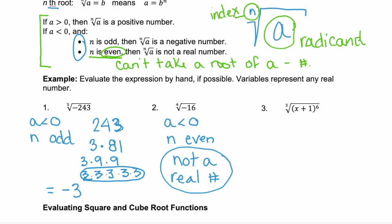In example 3, we're taking the cube root of x plus 1 to the 6. Since we're taking the cube root, we're looking for groupings of 3. So notice that x plus 1 to the 6 is the same as x plus 1 squared 3 times. So our grouping of 3 there is x plus 1 squared. So the cube root of x plus 1 to the 6 is x plus 1 squared.